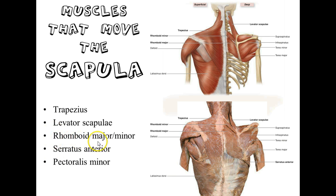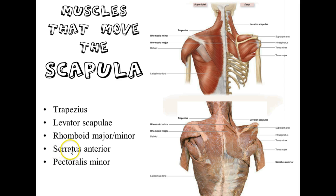We're going to talk about the rhomboid major and minor. Whenever you see major and minor, that's going to tell you about size — the major will be the larger, and the minor will be the smaller. And of course rhomboid is going to be named for the shape. We're also going to talk about a muscle known as the serratus anterior. If it's named serratus anterior, that means there's probably a serratus posterior.